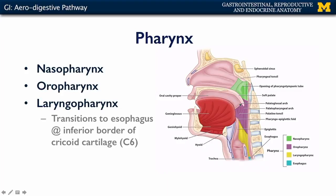Beyond the oral cavity — in regions beyond the palatoglossal arch — we have the pharynx, consisting of a nasopharynx, an oropharynx, and a laryngopharynx. The oropharynx is the space between the soft palate down to the line of the epiglottis, contiguous with the oral cavity. Food materials pass into the oropharynx and then move into the laryngopharynx, where materials may either move anteriorly into the larynx and trachea — the respiratory system — or posteriorly into the esophagus. The transition from the laryngopharynx into the esophagus begins at the inferior border of the cricoid cartilage, approximately at the level of C6.